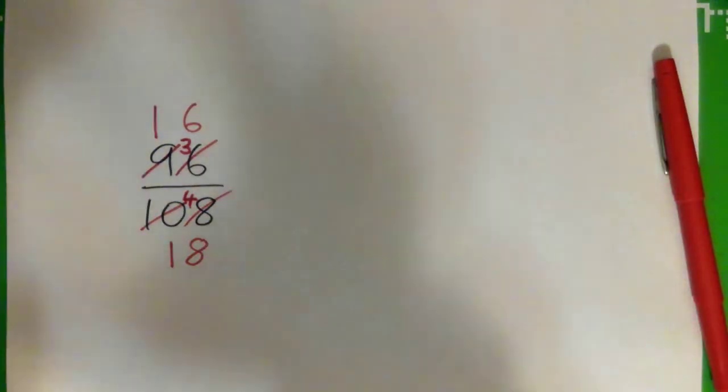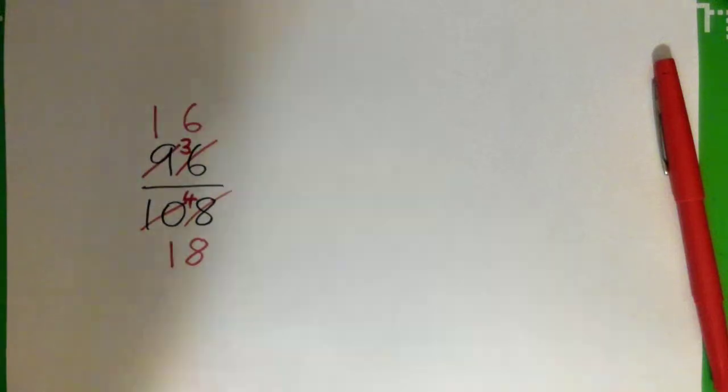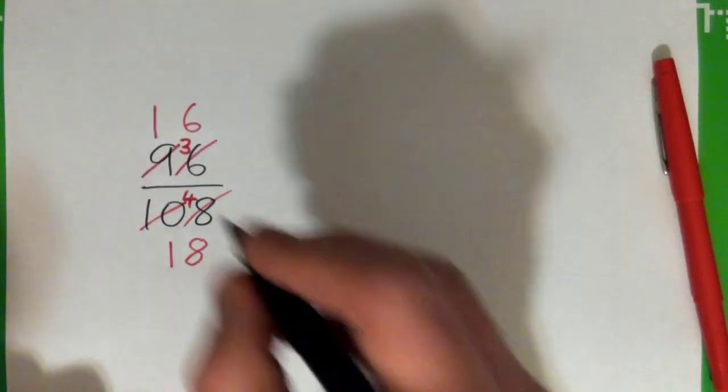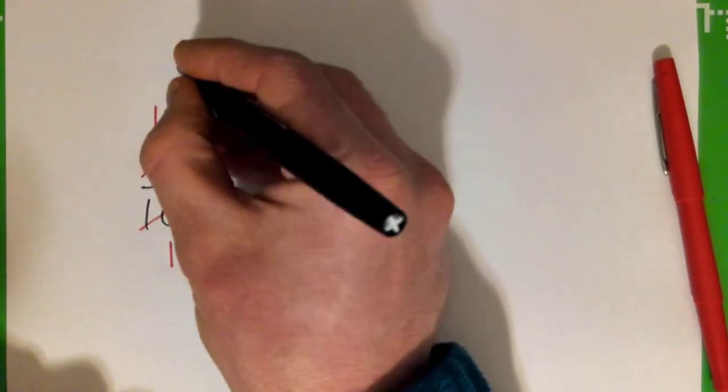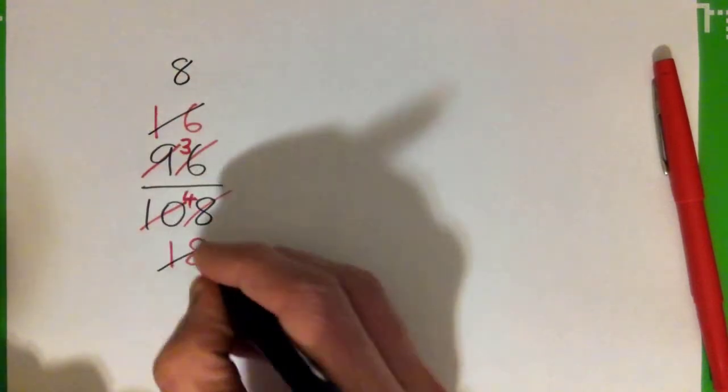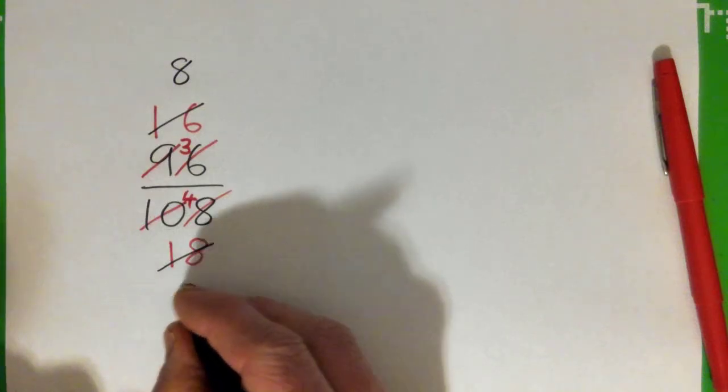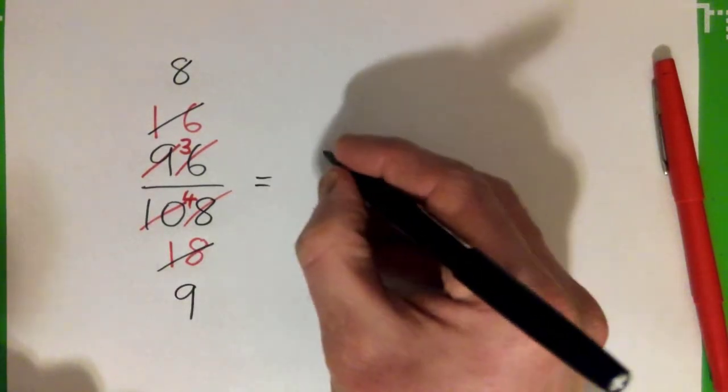And now you've got 16 over 18, so what goes into both 16 and 18? Yep, 2 into 16, 8 times. 2 into 18? 9 times, right? So, 8 ninths.